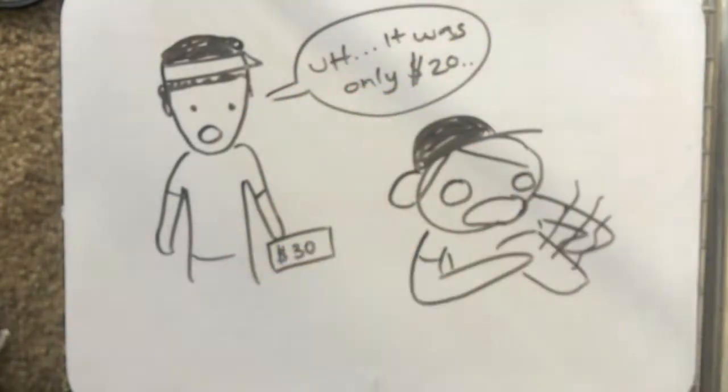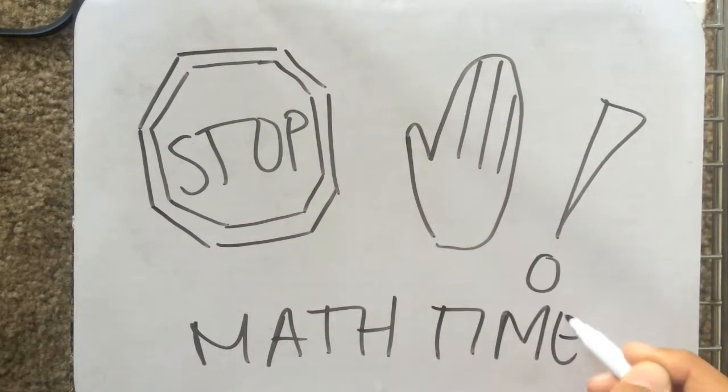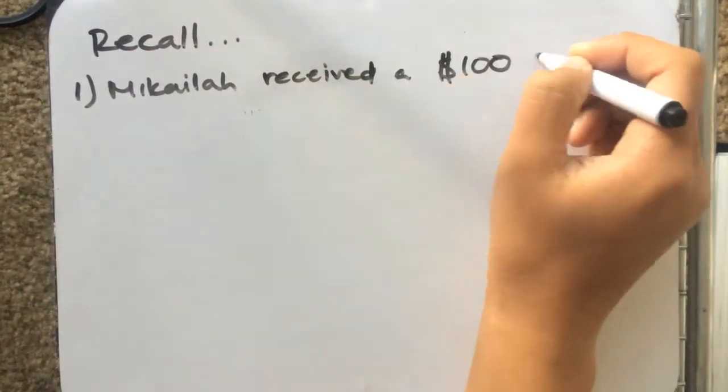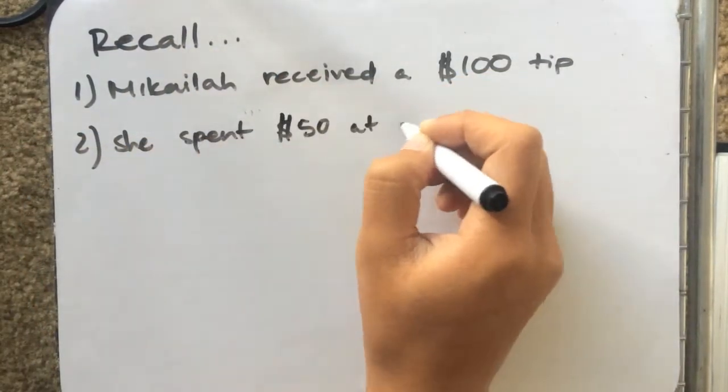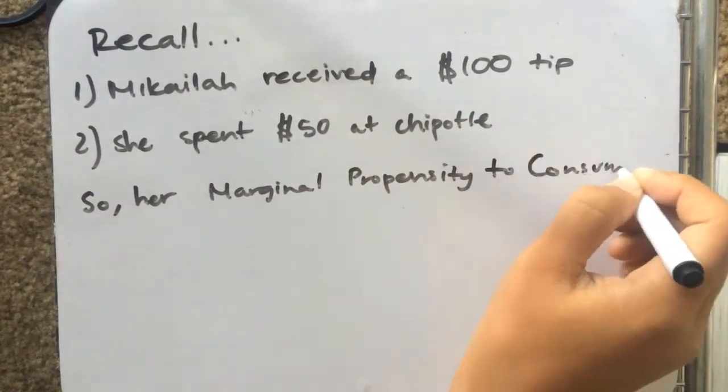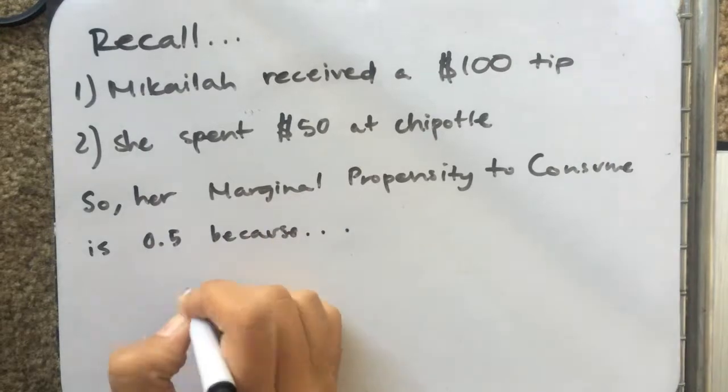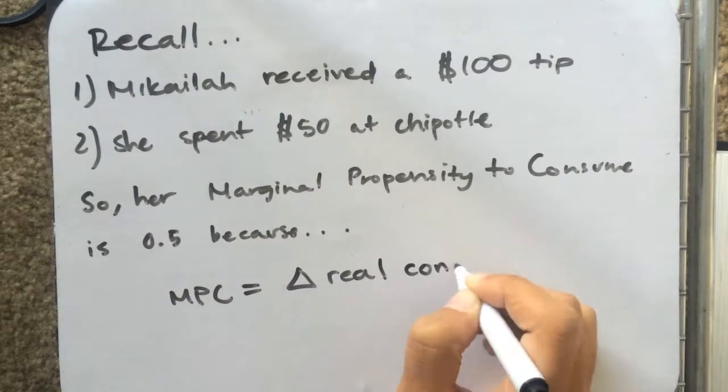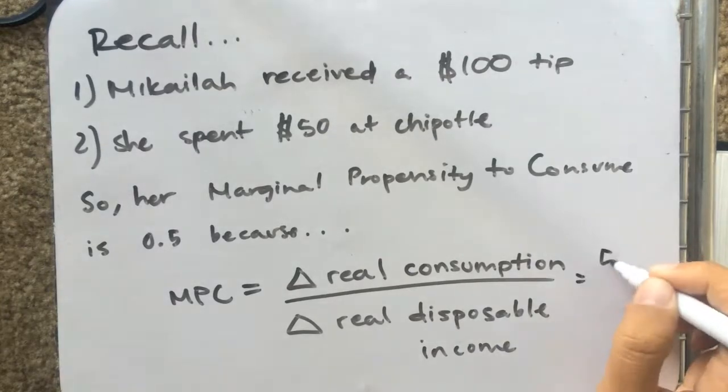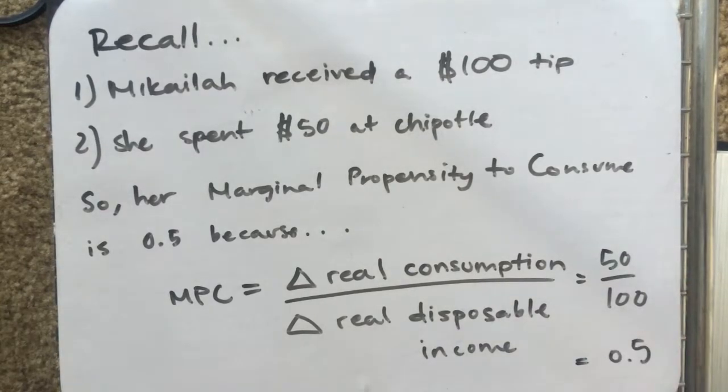Now, it's time to stop. Pull out them writing utensils, kids. It's math time. Recall that Michaela received a $100 tip. She spent $50 on Chipotle. Her marginal propensity to consume can be calculated by the change in real consumption over the change in real disposable income. In this case, it's 0.5.